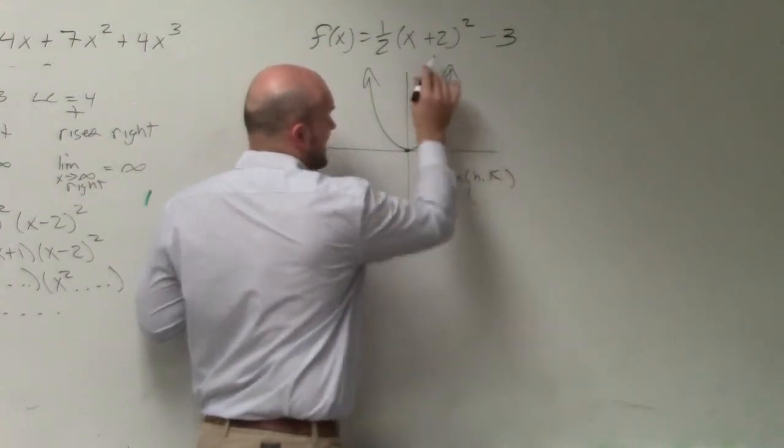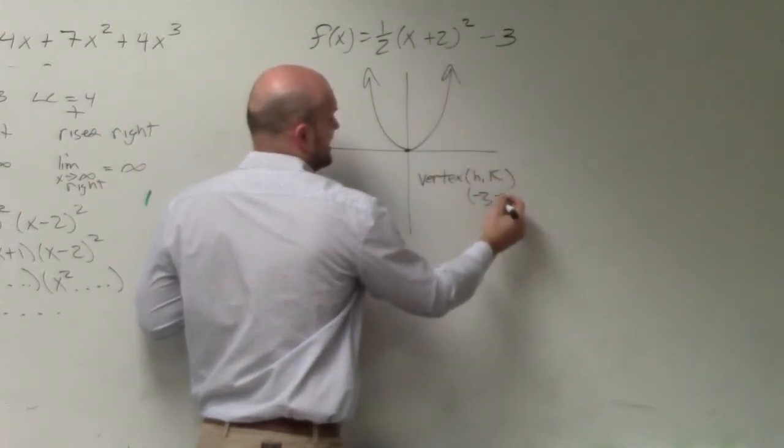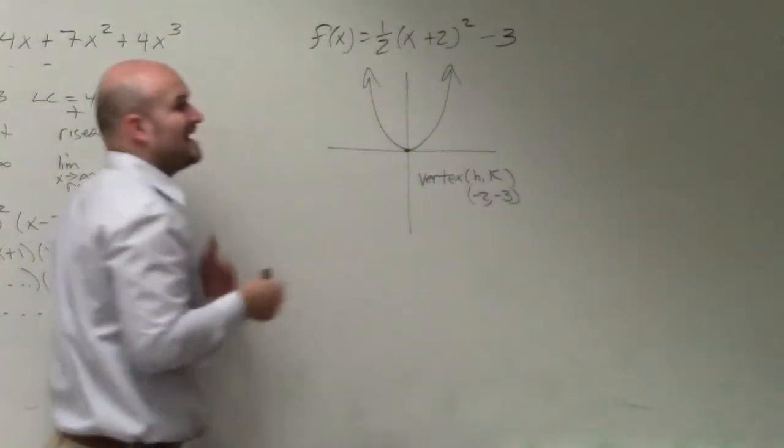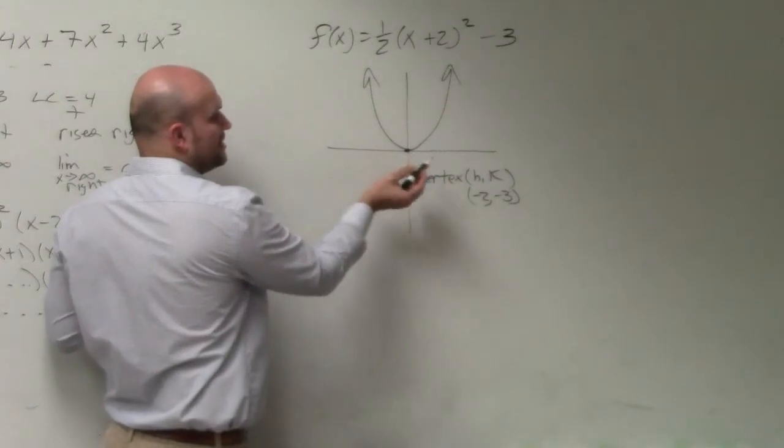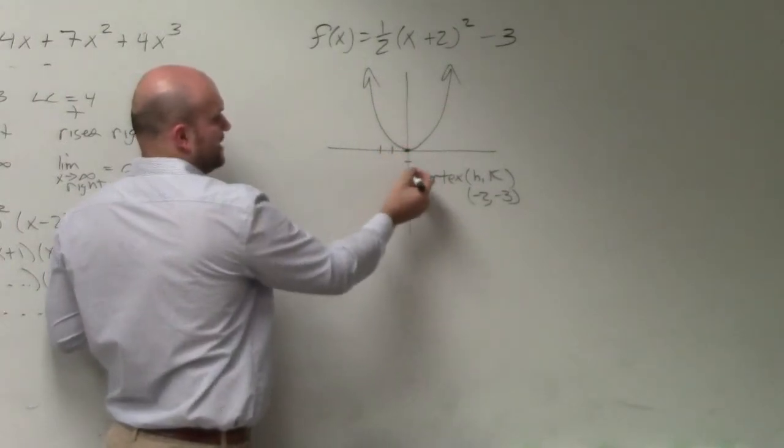This is in vertex form. So we can say h is negative 2 and k is negative 3. Remember, it's x minus h in the vertex form. So now, my new vertex, instead of it being at 0, 0, is negative 2, negative 3.